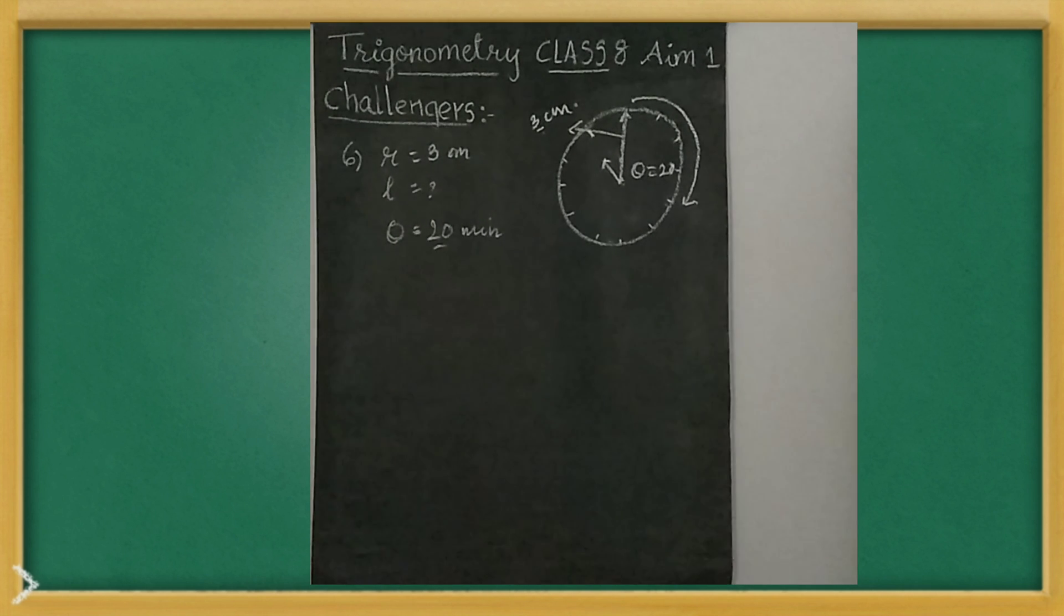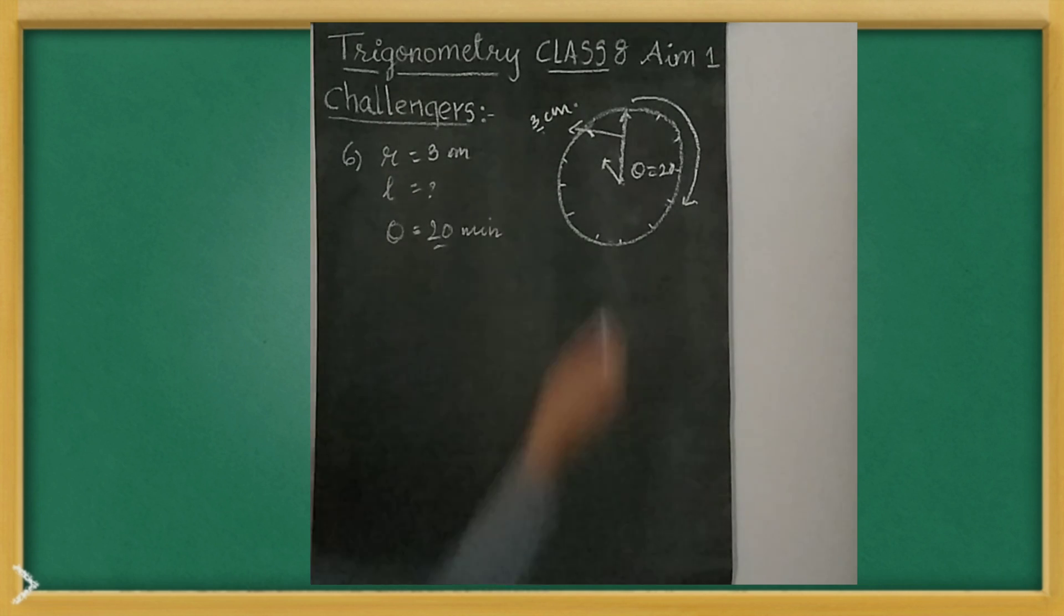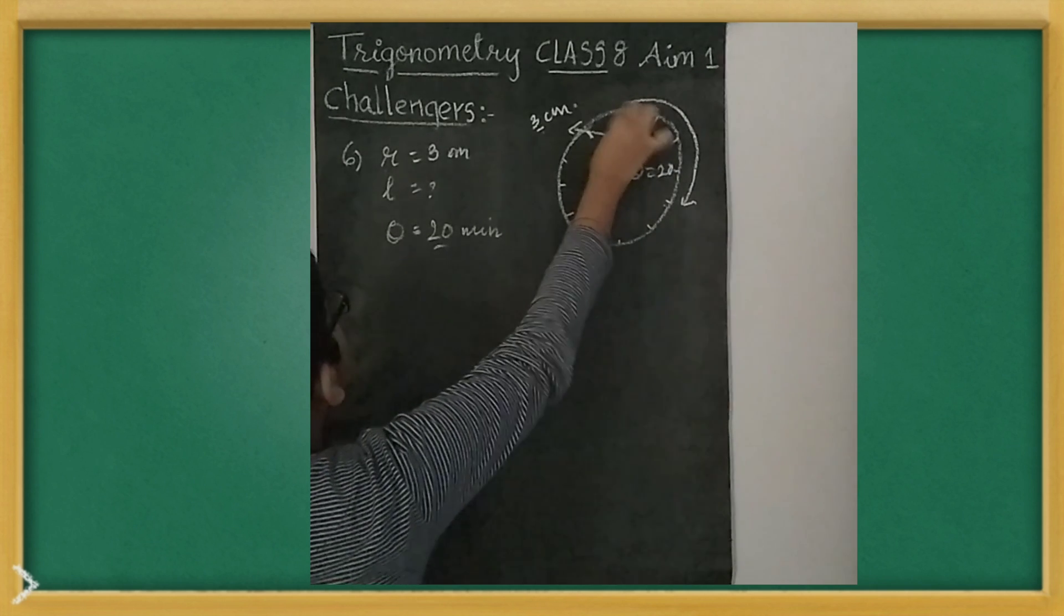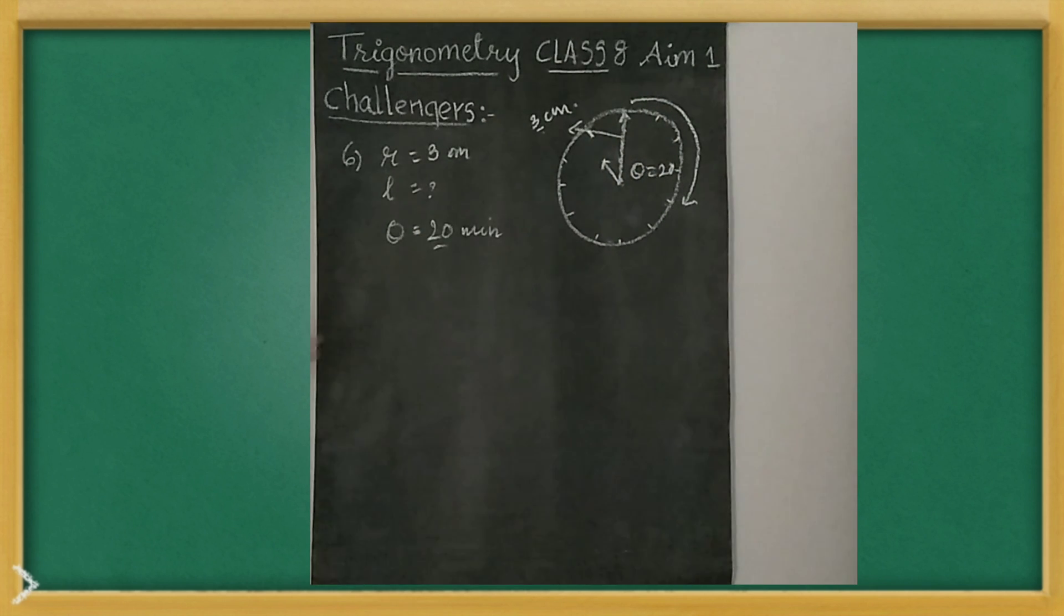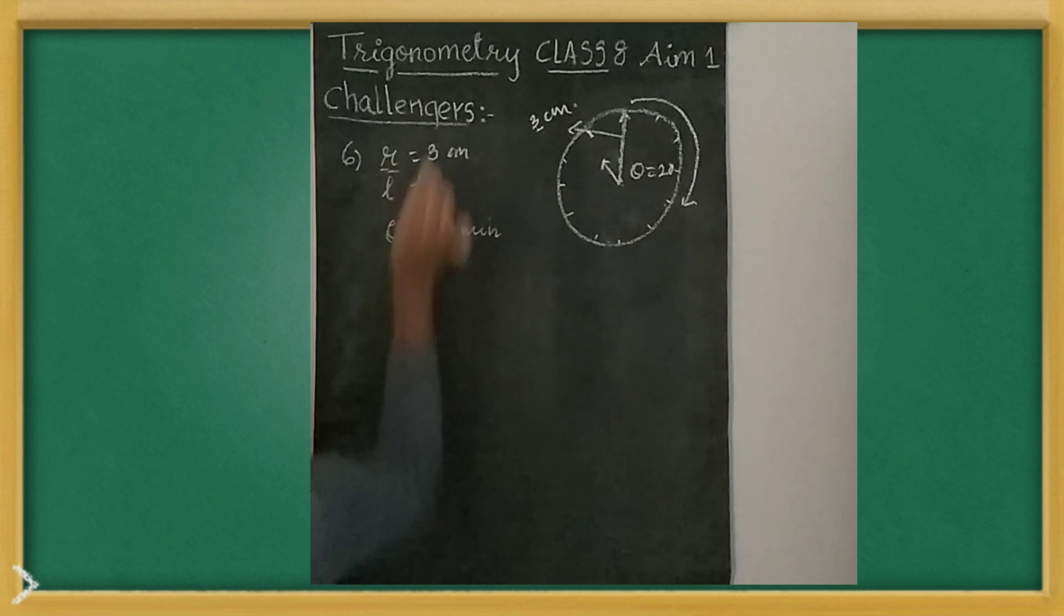So, sixth one actually, first we will read the question every time. A minute hand of a table clock is 3 cm long. How far does the tip move in 20 minutes? The question actually means that a clock is there. Assume this is a table clock. This is the minute hand, it's the longest one. We are thinking it is moving towards the tip of the clock. So we will consider that as radius.